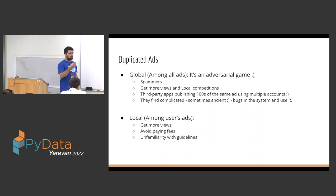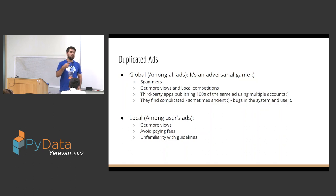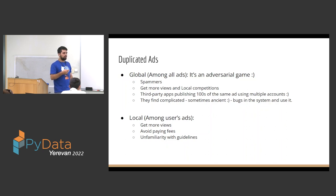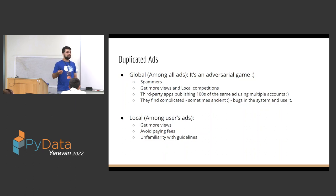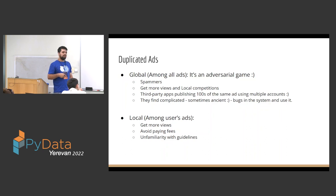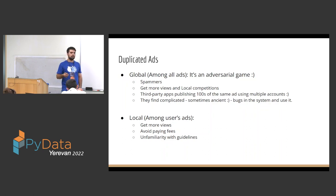We are not going to talk about global duplicates right now because it's a large area. Instead, we'll talk about local duplicates — among a single user's ads. If I post an ad and then post another similar ad, DIVAR doesn't want them both posted. Users do this for a few reasons: to get more views as their ad goes down the listing, to avoid reposting fees, or sometimes they simply don't know it's not okay to post similar ads.